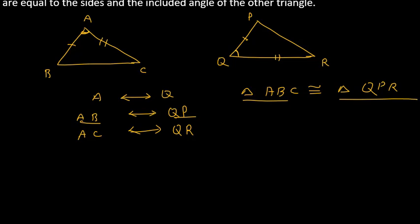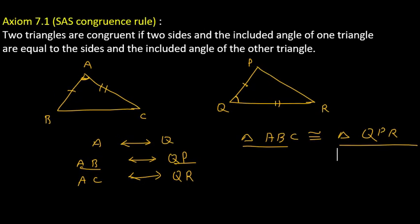So, have you understood what is the Side-Angle-Side congruence rule? Two triangles are congruent if two sides and the included angle of one triangle are equal to two sides and the included angle of the other triangle. This is an axiom, so there is no need to prove it. You can draw different triangles in which two sides and the included angle are the same, and you will find that the other three conditions are also satisfied — the triangles are congruent.